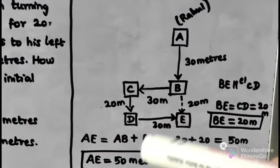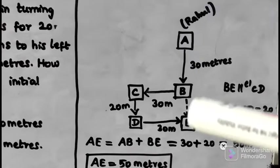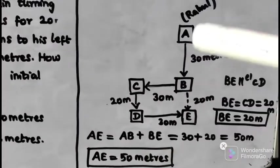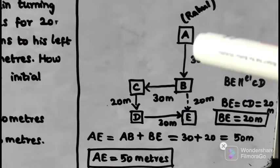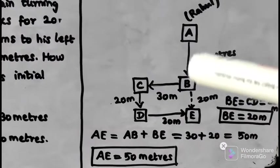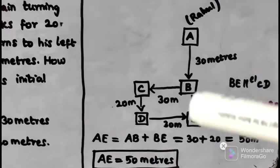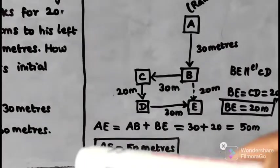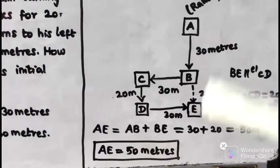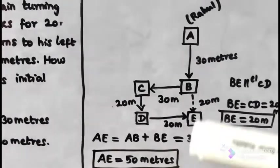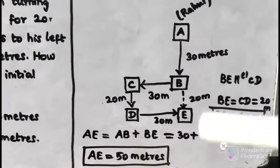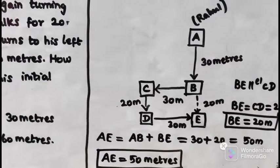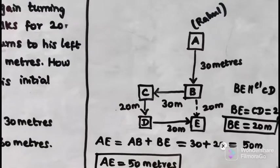Now we calculate AE. AE equals AB plus BE. AB is 30m, BE is 20m. So AE equals 30 plus 20 equals 50m. Therefore, the distance from initial point A to destination E is 50 meters.